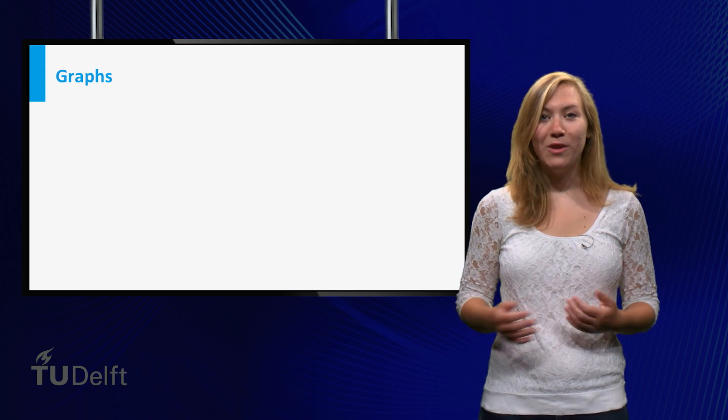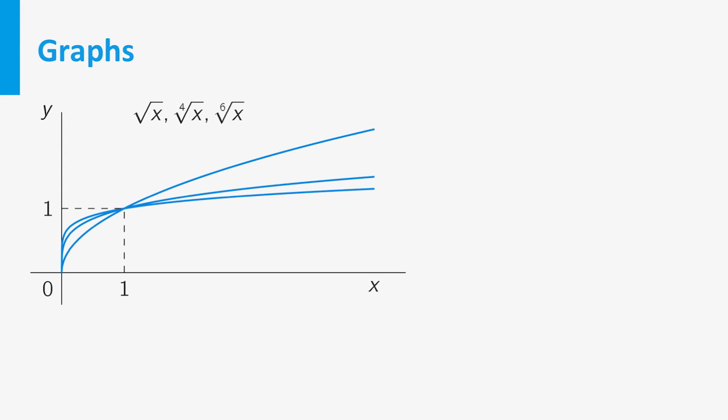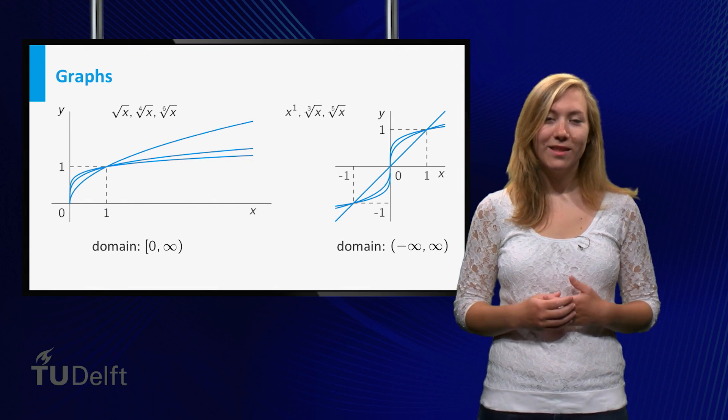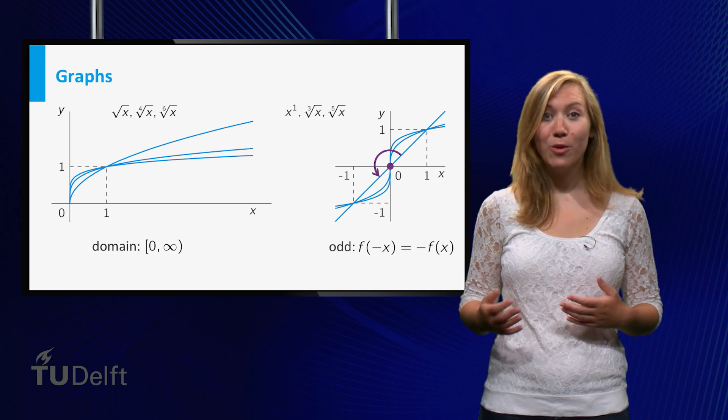Let's look at the graphs of these power functions. For even values of n the graphs look quite similar. These functions are only defined for non-negative values of x. For odd values of n the graphs look quite similar too, and are defined for all real values of x. These graphs are also point symmetric in the origin.